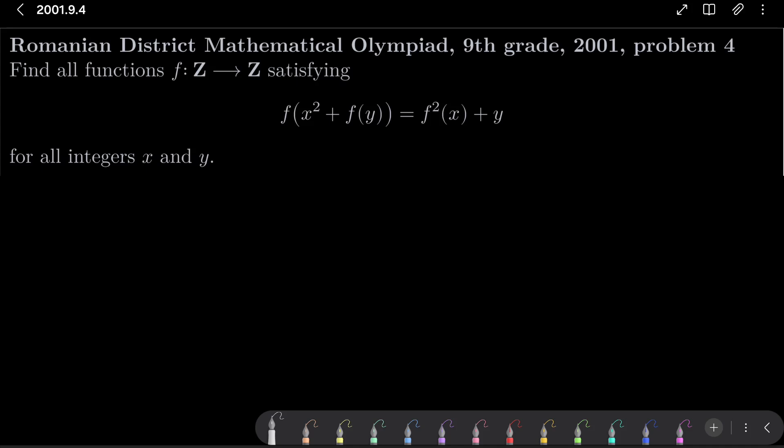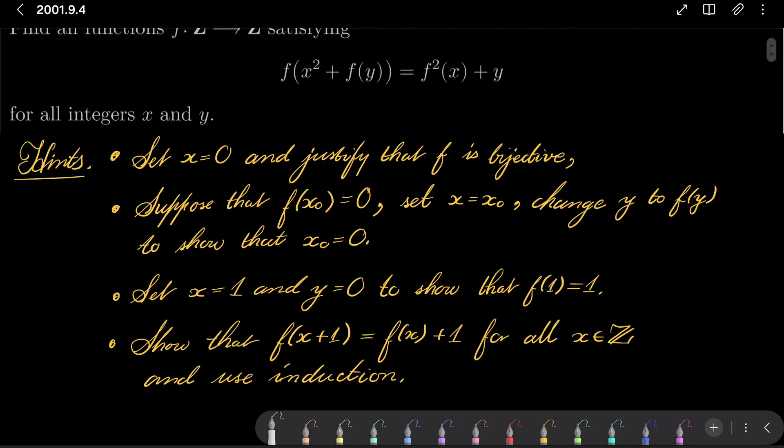Here are my hints for this problem. First, set x to be 0 and justify that our function must be bijective. Then, suppose that, since it is bijective, it has a zero, only one zero in fact.